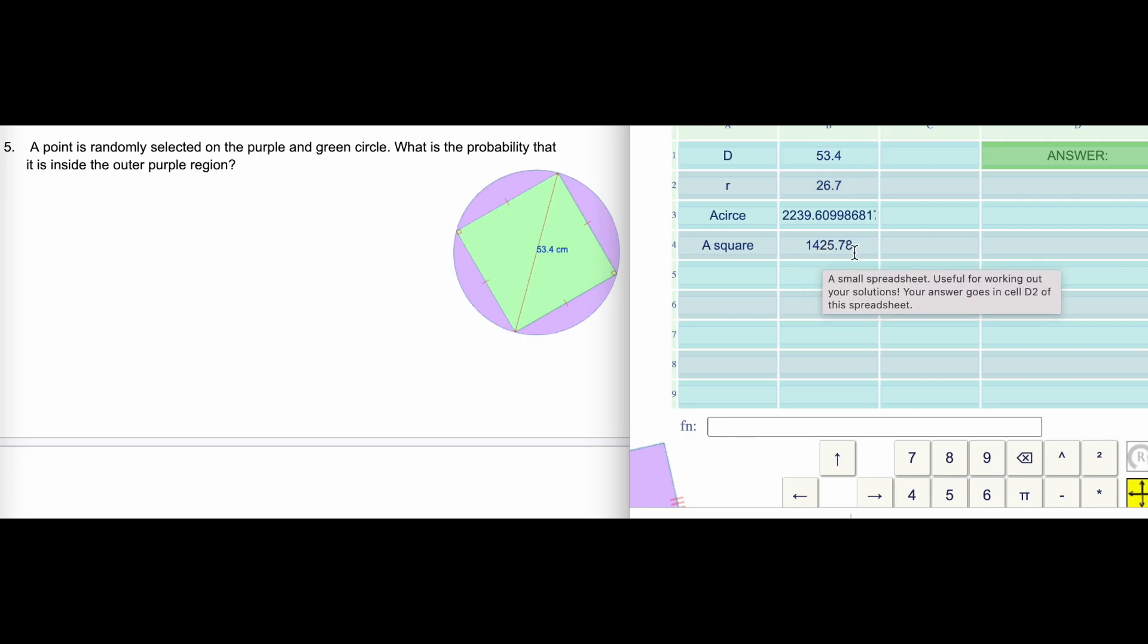What's the probability that you're picking a point that's inside this outer purple region? It's the area of purple. We have to figure that out - circle remove the square. The area of the circle take away the area of the square. Now that you have this, we can now figure out the probability. It's the purple area out of the total area, which is the circle.